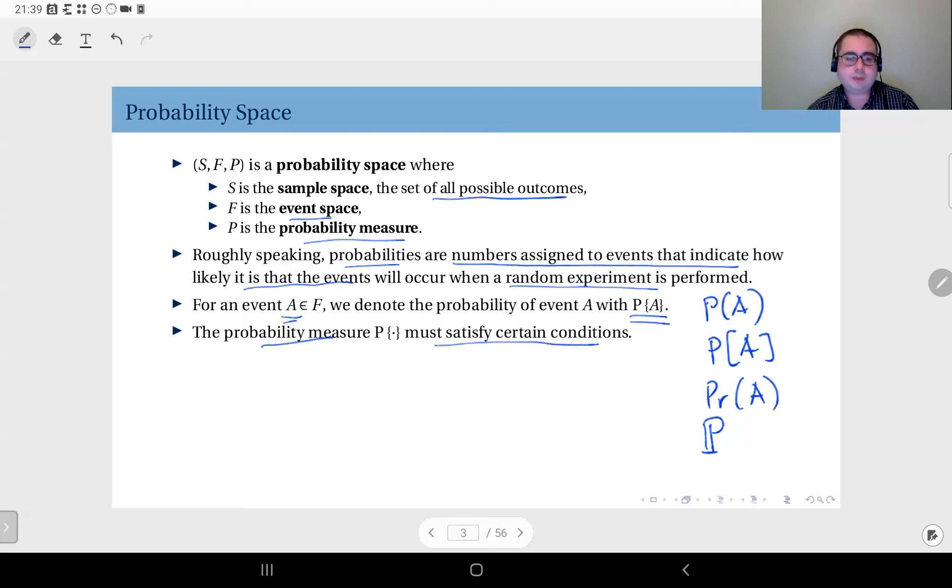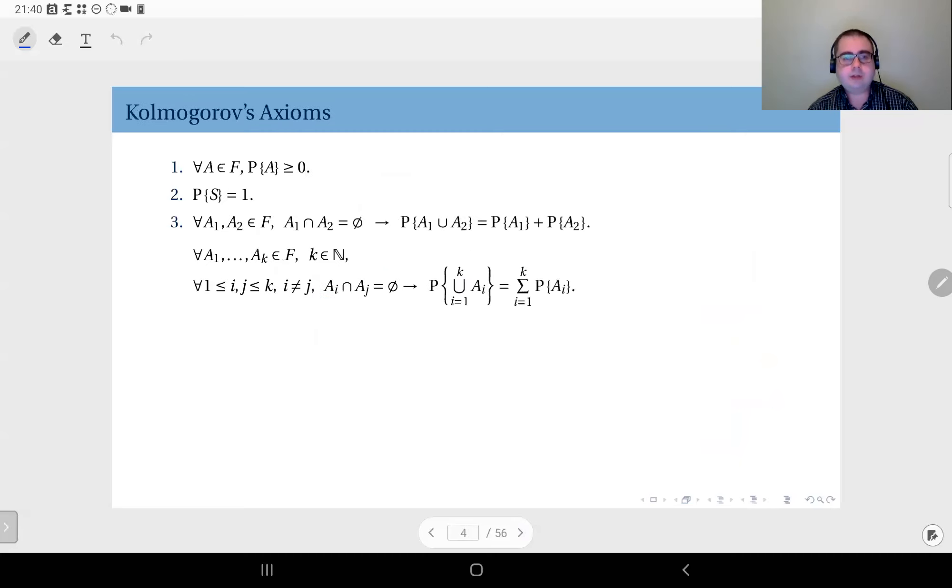The probability measure is not actually an intrinsic function, it's not a natural phenomenon. It's our assignment—we choose what probability measure to use when dealing with the model. To be able to do that, we have certain rules, certain conditions that the probability measure must satisfy, and these are laid out by Kolmogorov as these three axioms.